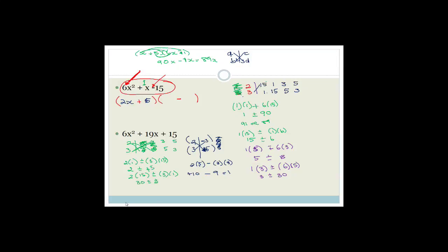I made an error — let me correct it. We have 2 and 3 as the x-coefficients, and 3 and 5 as the last-term factors, with 2×5 = 10 and 3×3 = 9. Since we need −6 plus 20 — wait, more precisely: we need minus 9 plus 10 to give +1. Writing the brackets straight across gives us (2x − 3)(3x + 5). That's the correct factorization.